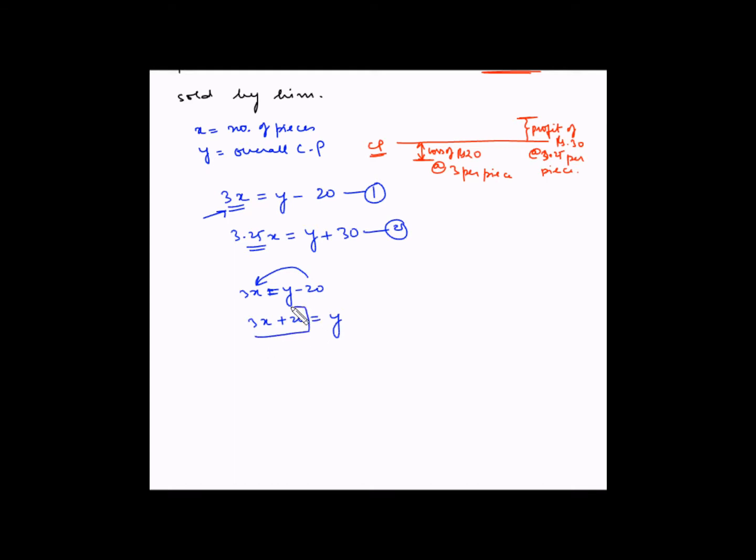Now this value of Y let's substitute in this equation. So 3.25X is equal to 3X plus 20 plus 30. So 3X plus 20 is the value of Y. We substituted Y with this value here and the remaining everything else remains the same.